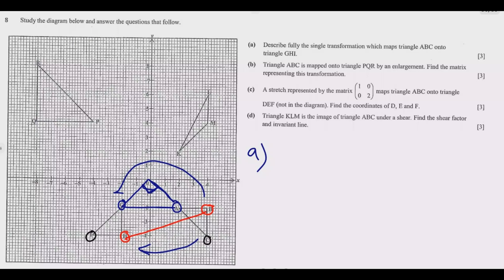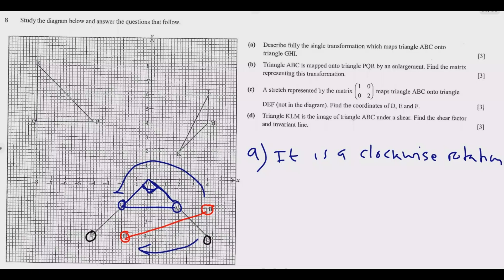So the answer is: it is a clockwise rotation of 90 degrees about the origin, which is (0, 0). That completes Question A.